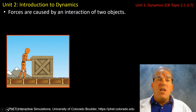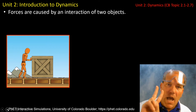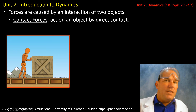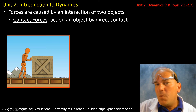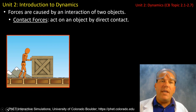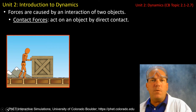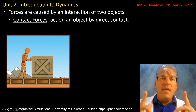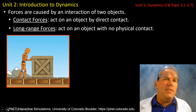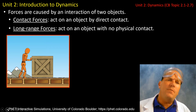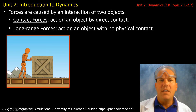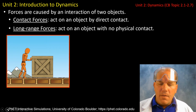Forces are caused by an interaction of two objects — that is critical. Two objects are required for there to be a force. Now there are two different types of forces. Contact forces act directly upon an object — the man applying a force to the crate is a contact force, and the force of friction (the force of the road onto the crate) was also a contact force. There are also forces known as long-range forces, which I will refer to as field forces. Long-range forces act upon an object without requiring physical contact.